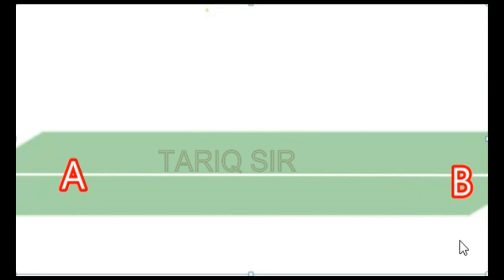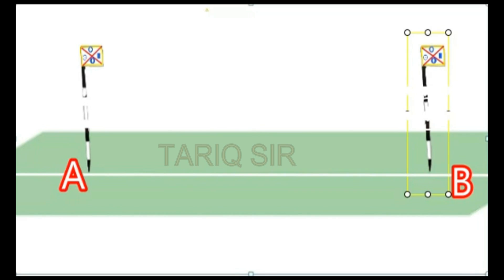Now what we do is we put a ranging rod right onto this point A like this. So here I place this ranging rod at the point A, and we have placed a ranging rod at point B.